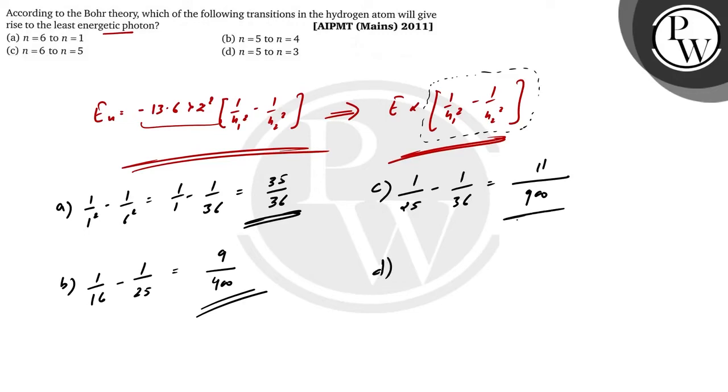Option D will be 1 upon 3 square is 9, minus 1 upon 5 square is 25. This will be 25 times 9 is 225, and 25 minus 9 is 16 upon 225.